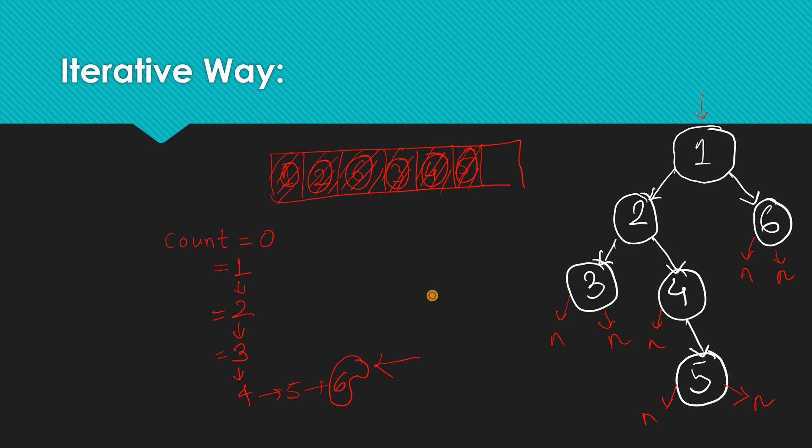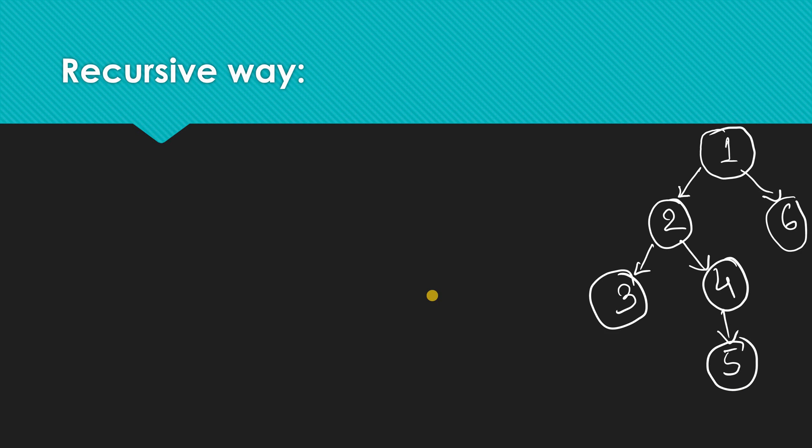Now let's check how we can do it in a recursive way using the same tree. If you haven't watched my previous video where I explained traversals like in-order, post-order, and pre-order, I highly recommend you go back, watch that video, and then come back here. You can click the pop-up link on the top right corner of the screen.